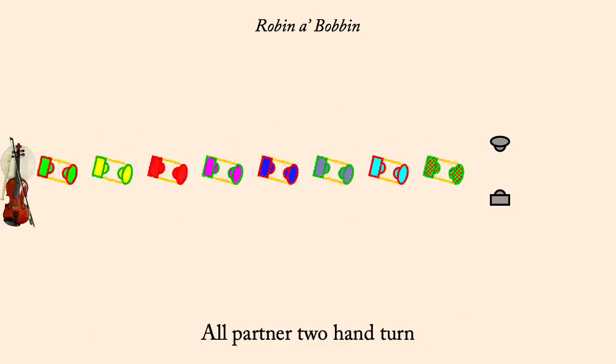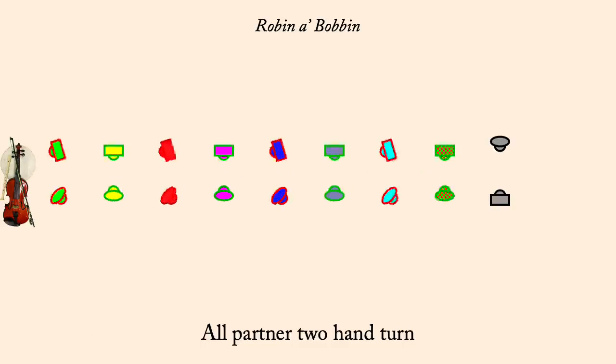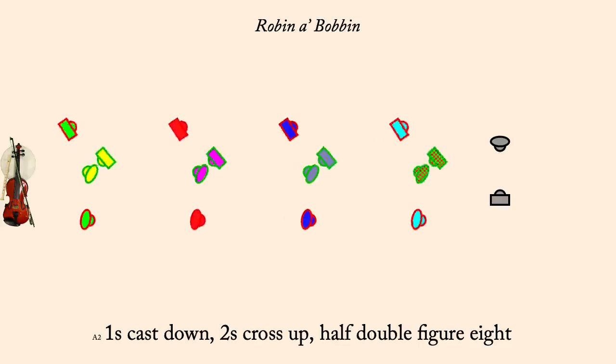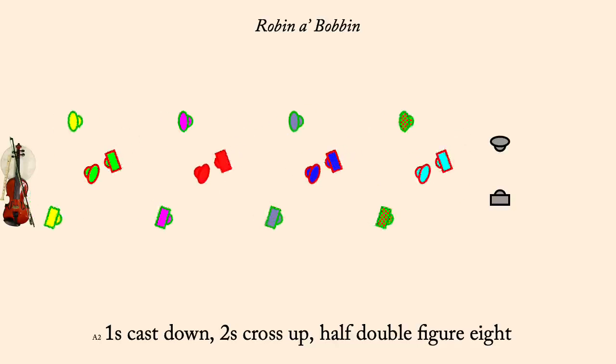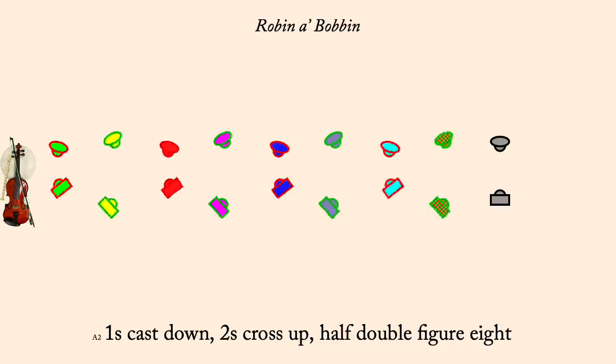Ones cast down, twos cross up, double half figure eight. Partner two-hand turn.